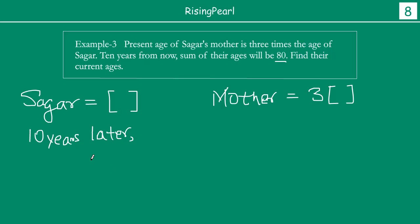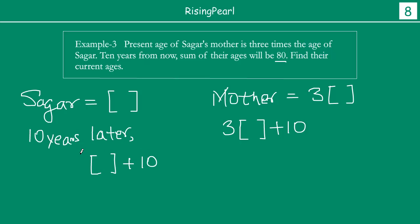Now, 10 years later, Sagar's age will be whatever his current age is plus 10. For example, if you are 14 years old today, 10 years later you will be 24. So Sagar 10 years later will be his current age plus 10, and Sagar's mother 10 years later will be 3 times her current age plus 10. We assume Sagar's age is x, so Sagar's mother's current age is 3x. Ten years later, Sagar will be x plus 10, and Sagar's mother will be 3x plus 10.